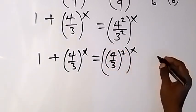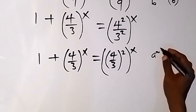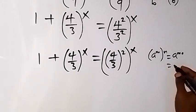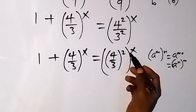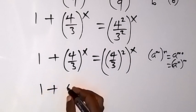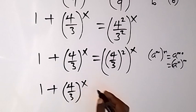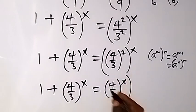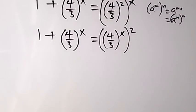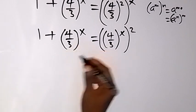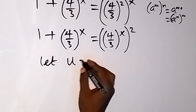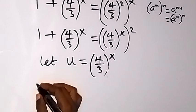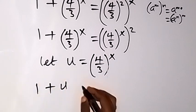From here, we can interchange this power using the law of indices: when we have a raised to power n multiplied by m, we can write it as a raised to power mn, which can also be written as a raised to power n, then raised to power m. So interchanging, we have 1 plus 4 over 3 raised to power x, equals 4 over 3 raised to power x, all raised to power 2. We use a letter u to represent 4 over 3 raised to power x. So let u equal 4 over 3 raised to power x. Then we can write: 1 plus u equals u squared.